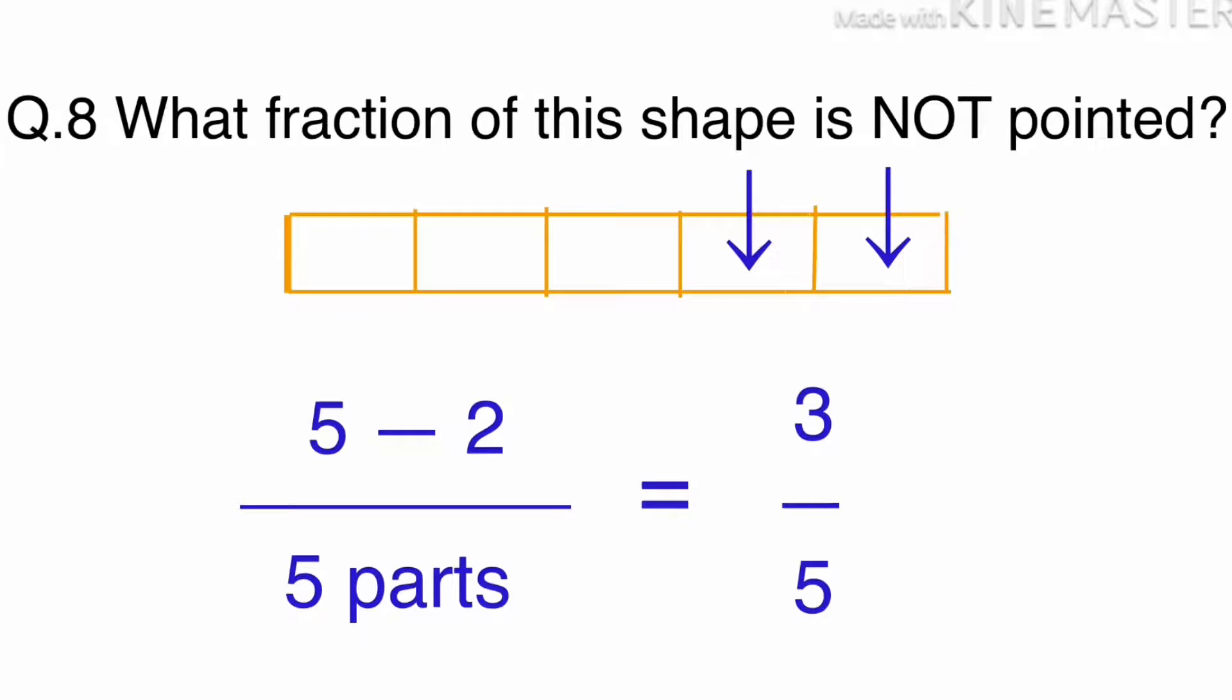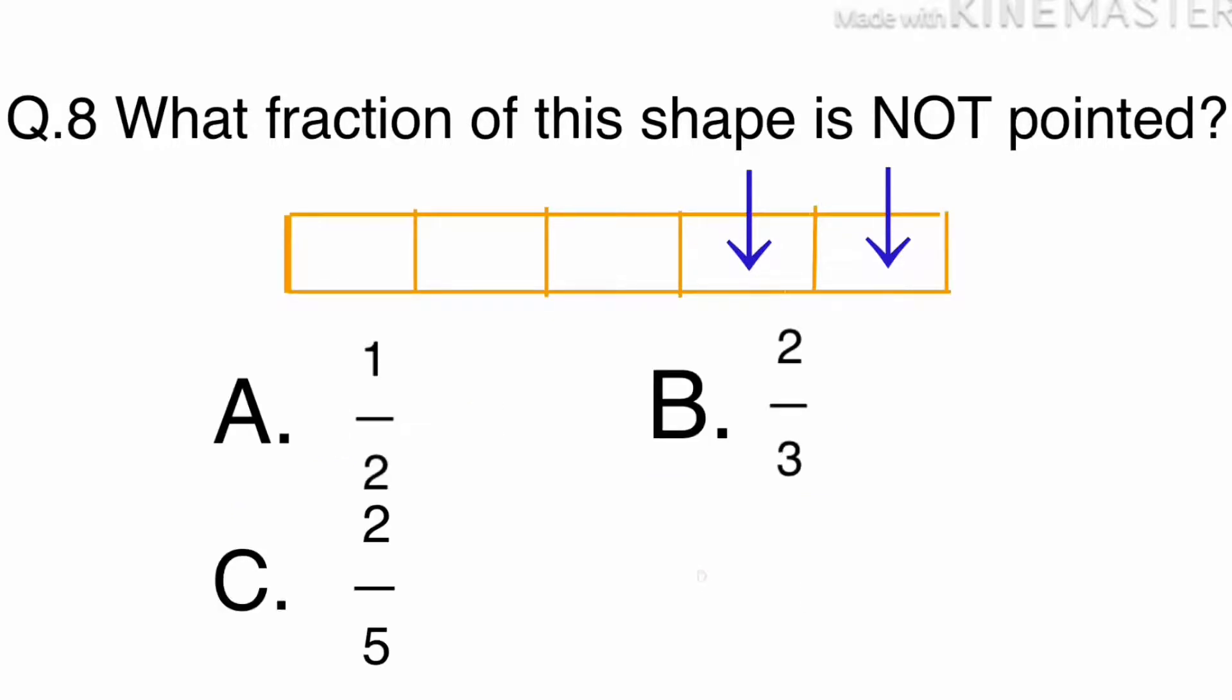The shape has 5 parts. 3 of the 5 are not pointed, so 3 fifths is not pointed. The answer is D. 3 fifths.